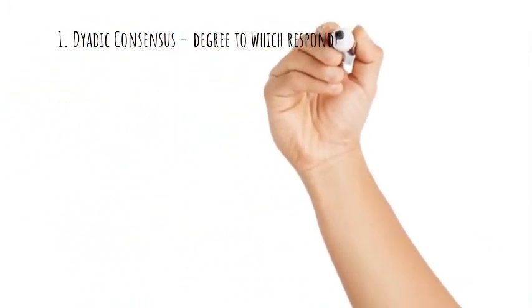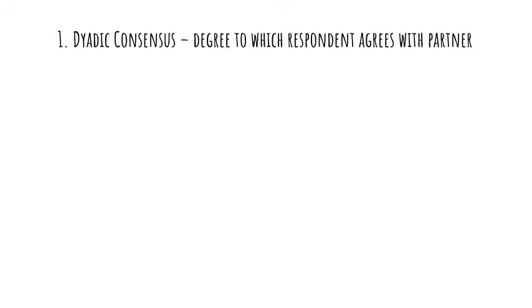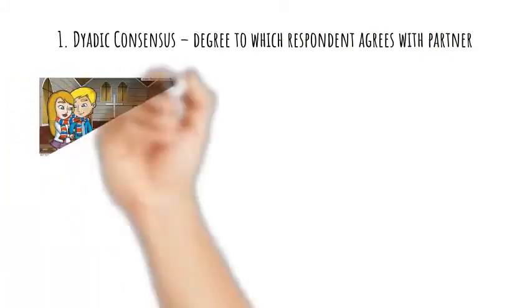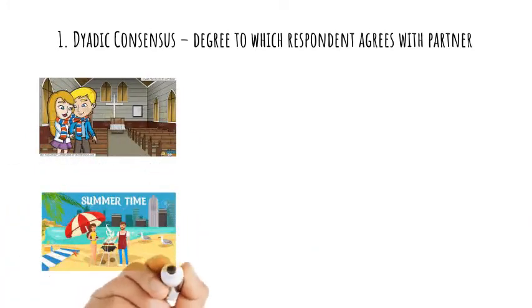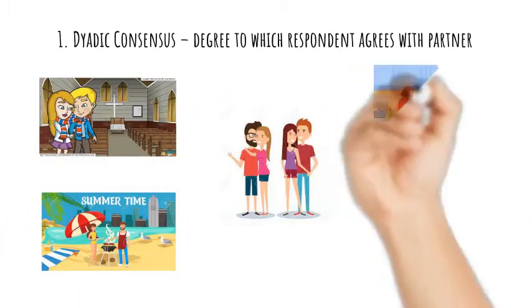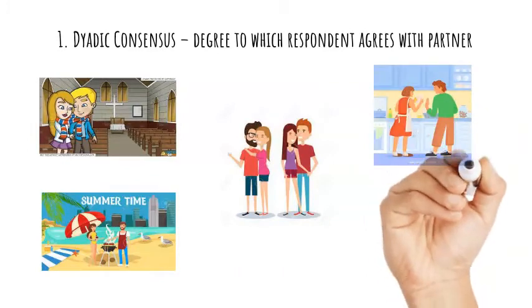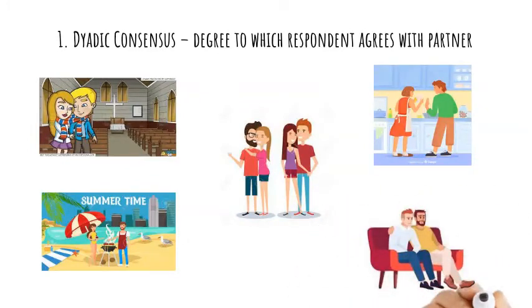Dyadic consensus is the degree to which the respondent agrees with their partner. It assesses the extent of agreement between partners on matters important to the relationship, such as religion, recreation, friends, household tasks, and time spent together.